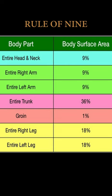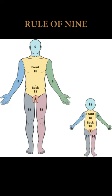In adults, the head is nine percent, whereas in children it takes 18 percent. For lower extremities, it is 18 percent for each extremity in adults, whereas in children it is 14 percent for each. This is what is called the Rule of Nine.